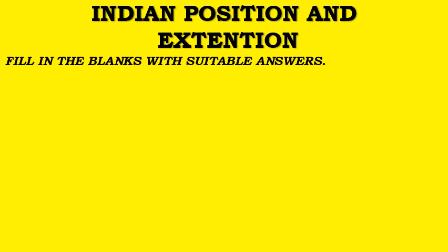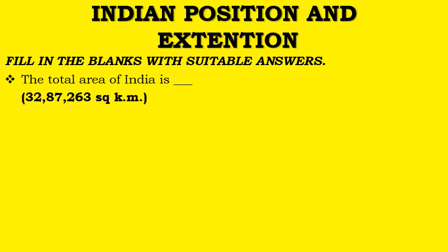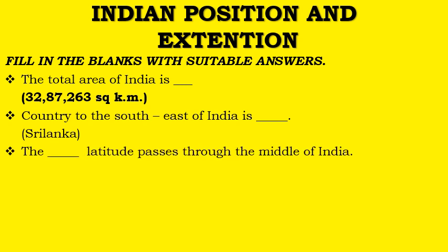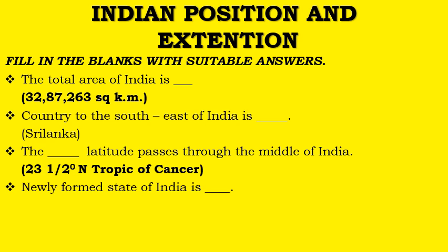Let us see fill in the blanks with suitable answers. The total area of India is 32,87,263 km². The country to the south-east of India is Sri Lanka. The dash latitude passes through the middle of India: 23.5 degree North, Tropic of Cancer. The newly formed state of India is Telangana.